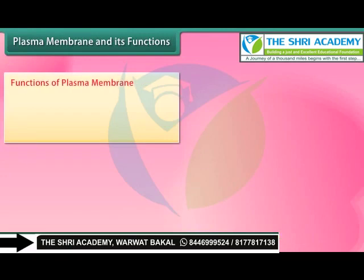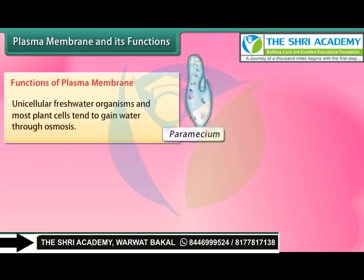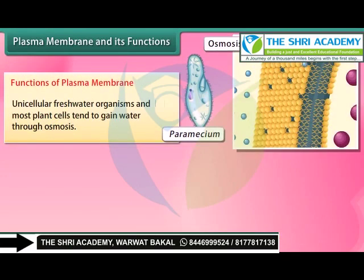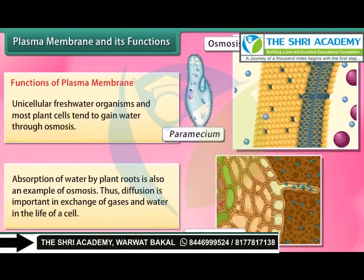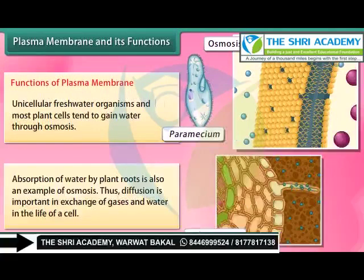Unicellular freshwater organisms and most plant cells tend to gain water through osmosis. Absorption of water by plant roots is also an example of osmosis. Thus, diffusion is important in the exchange of gases and water in the life of a cell.